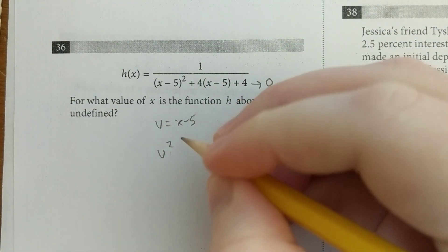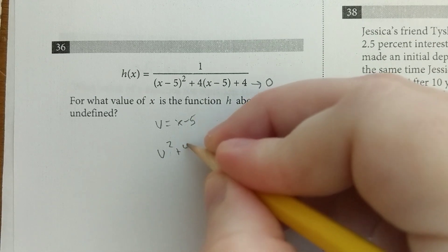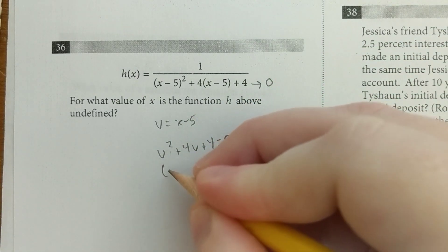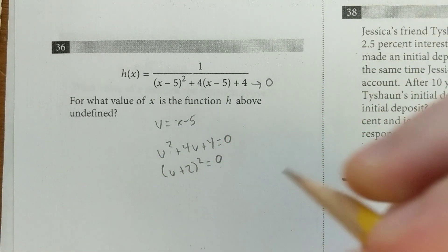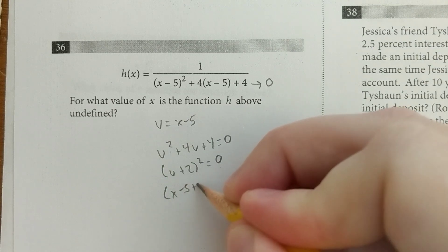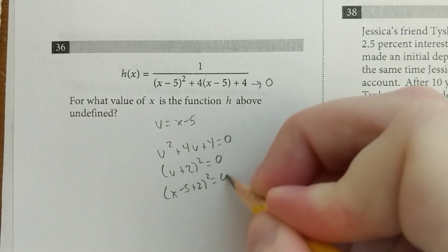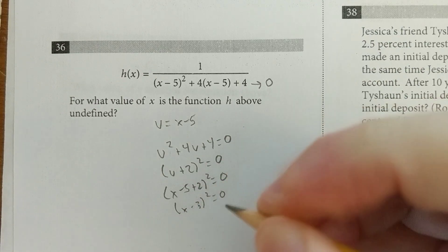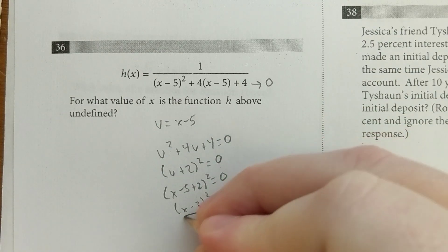And then when I rewrite it, I've got u squared plus 4u plus 4 equals 0. This is much easier to factor. It's just u plus 2 quantity squared. Then I can put the x minus 5 back in. x minus 5 plus 2 quantity squared equals 0. That's the same as x minus 3 quantity squared equals 0. And that means that x equals 3.